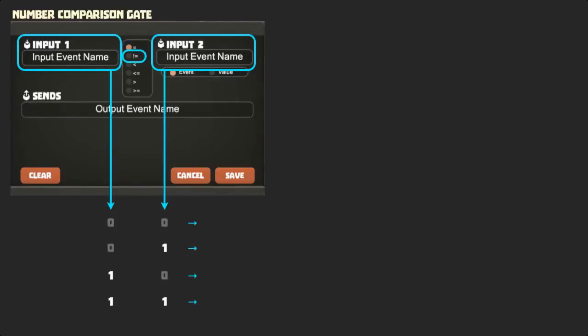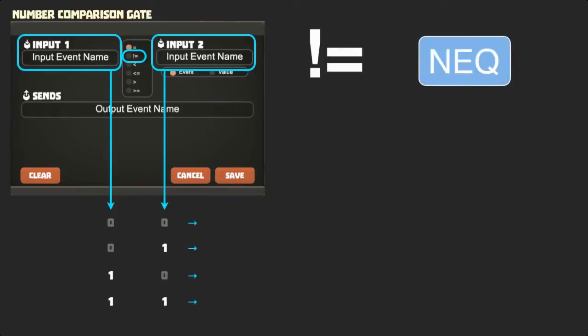The second operation is not equals, shown in the dialog box as a bang or exclamation point followed by an equal sign and on the information pane of our wiring tool as NEQ. The bang, like the letter N, here indicates negation or inversion. You may have seen it in mathematics classes like this.